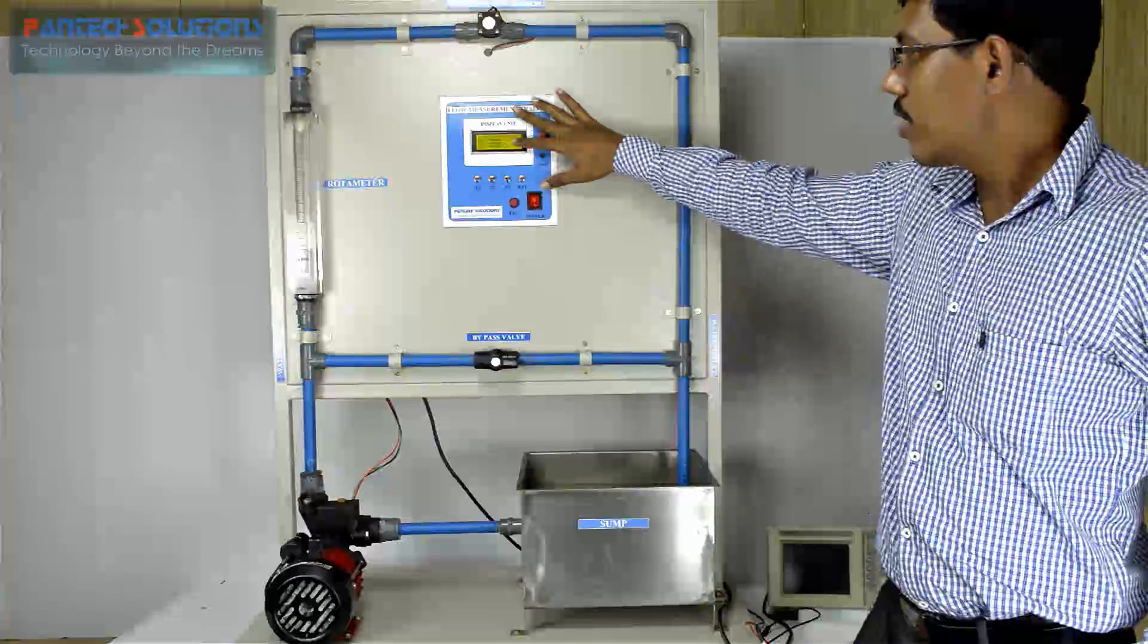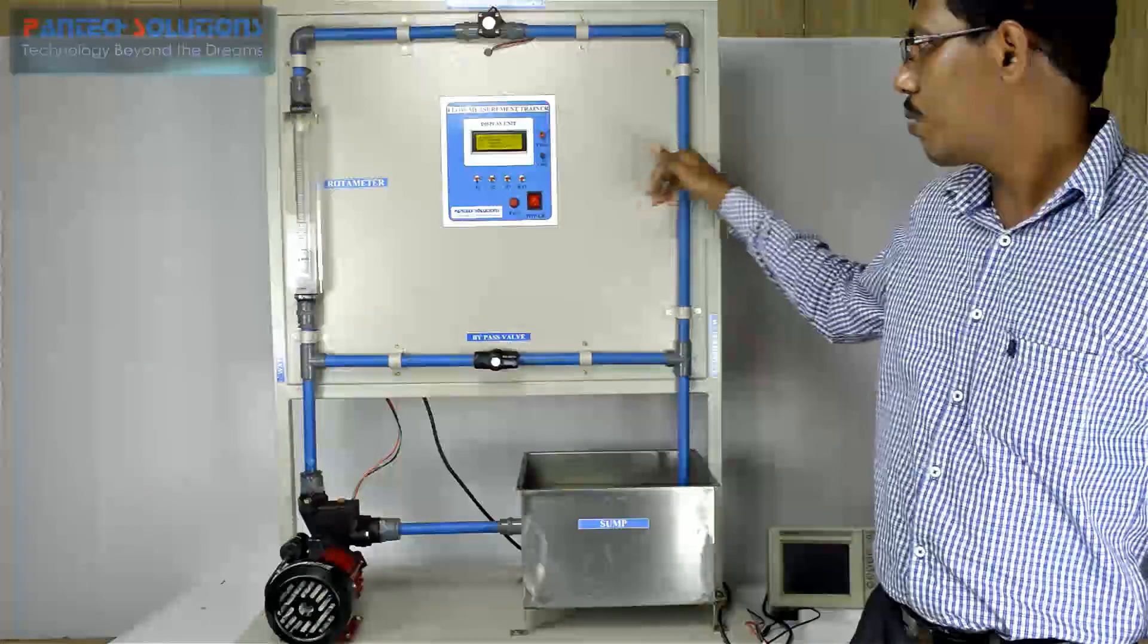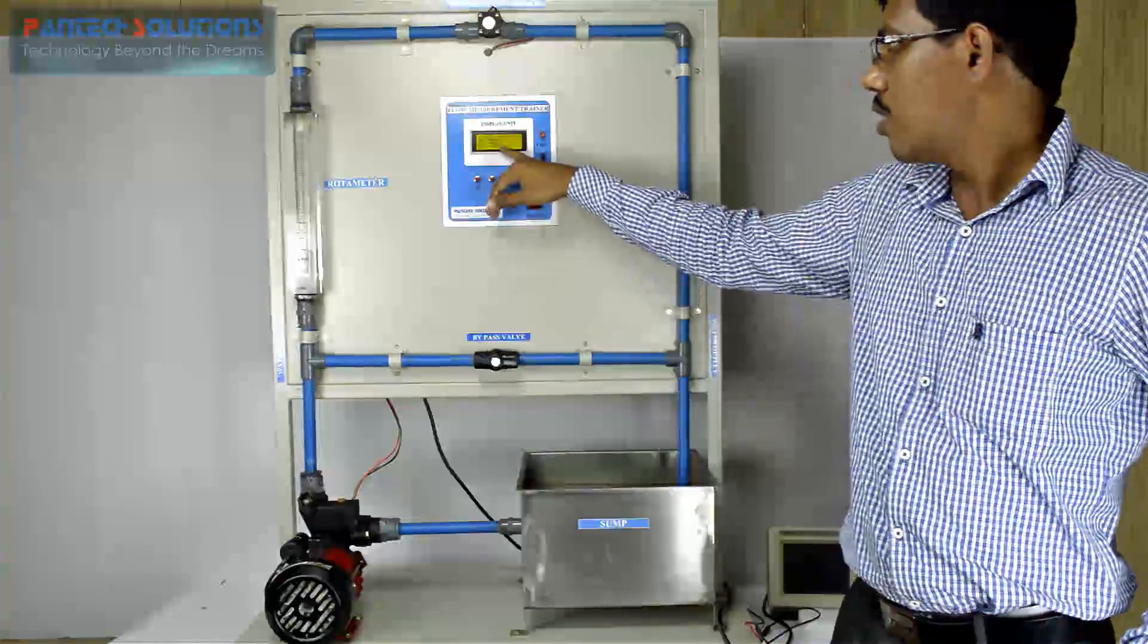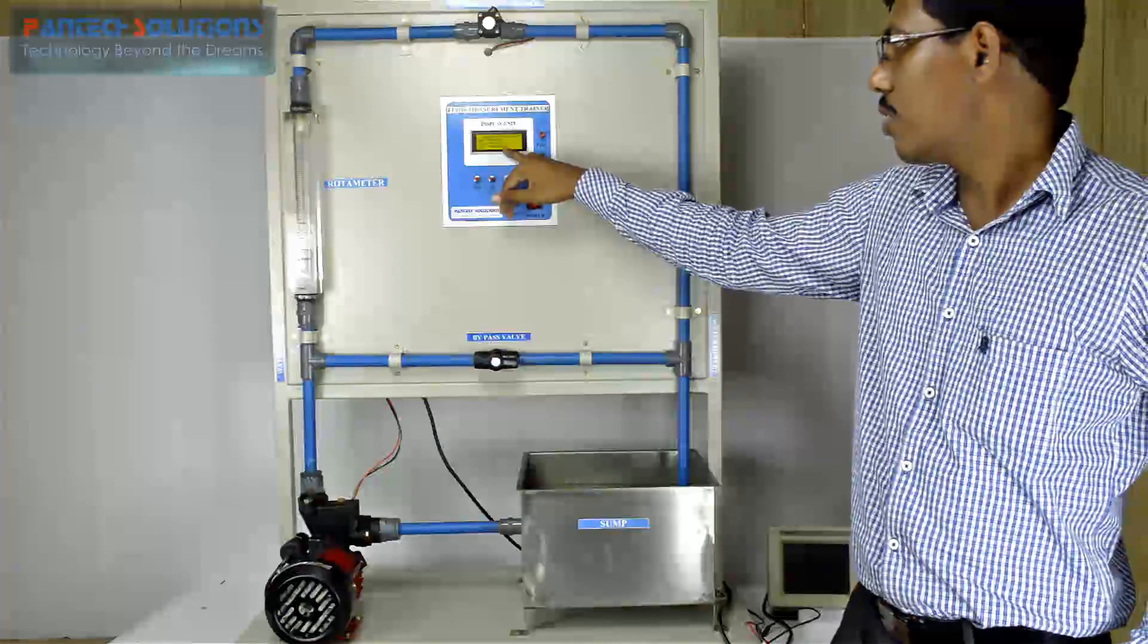Here, the set indicates the set liters for how much water is going to flow through this rotameter, and the flow liter is going to display up to how much liter it has flown.